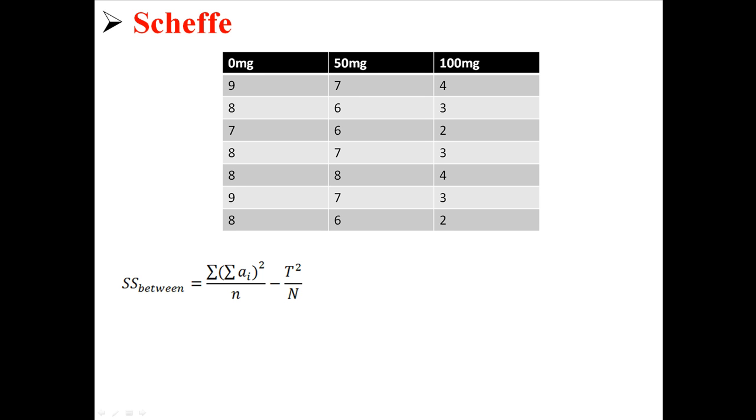So here's our data, and here's the equation for MS between. Now Scheffe is a pairwise test, so we're going to have to calculate three SS betweens, where we have three comparisons we can make: 0 to 50, 0 to 100, and 50 to 100. That compares each group to every other group.